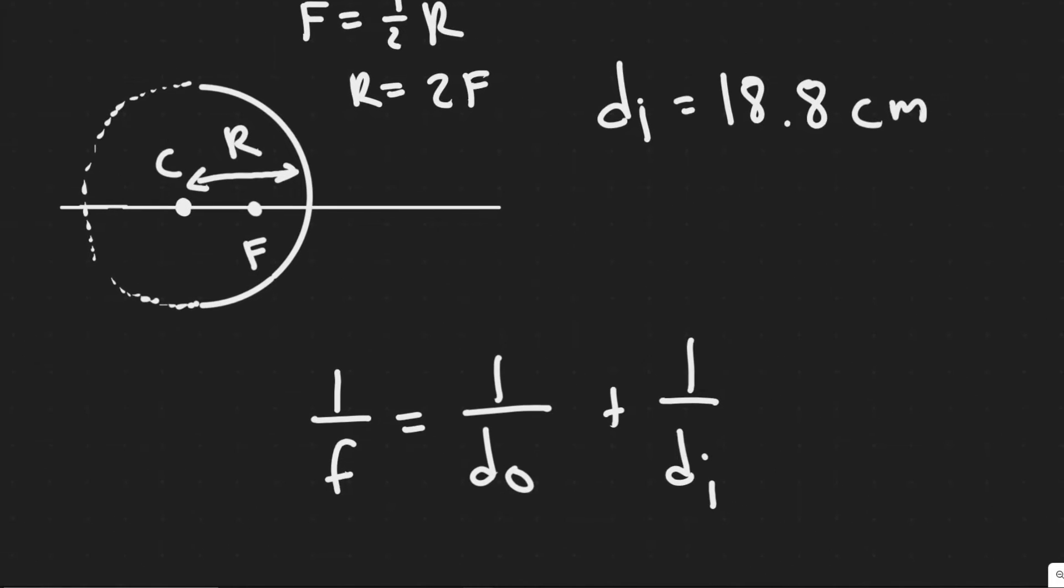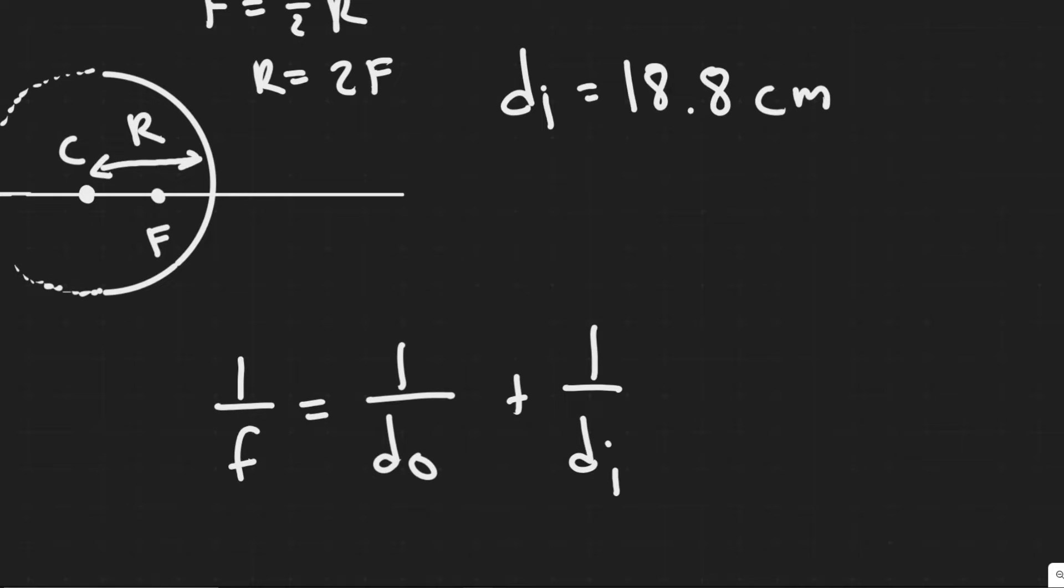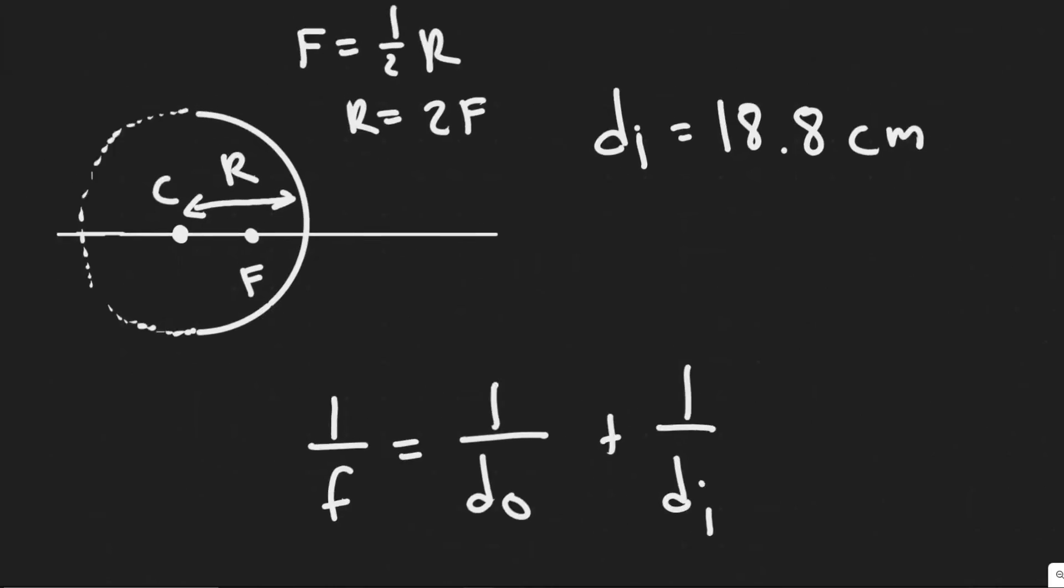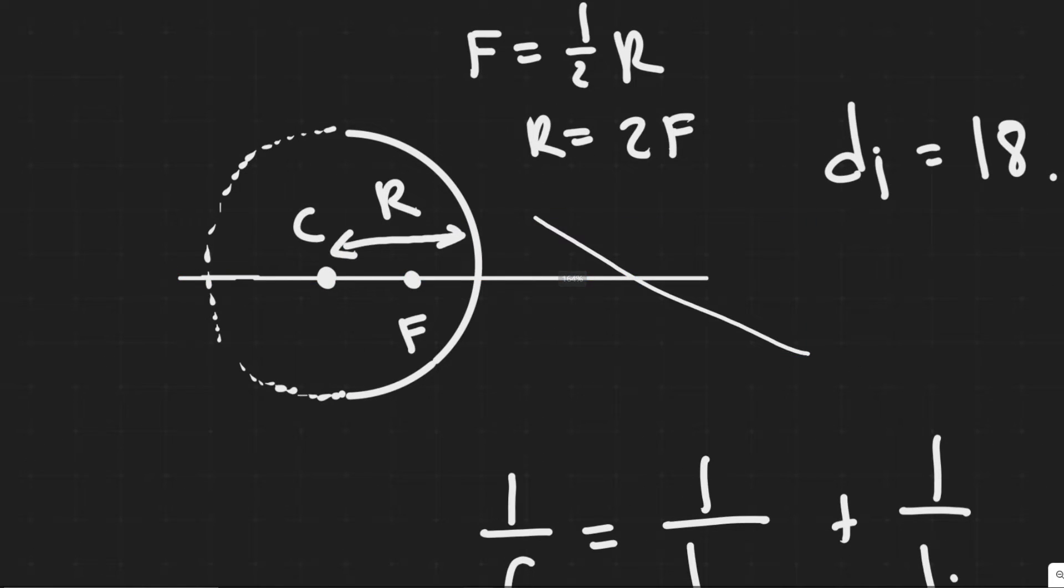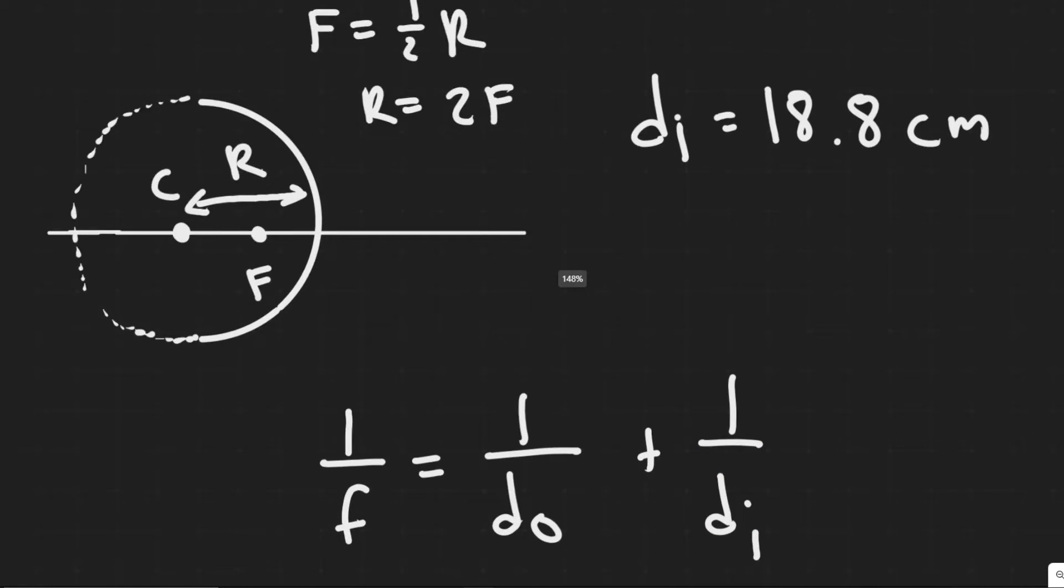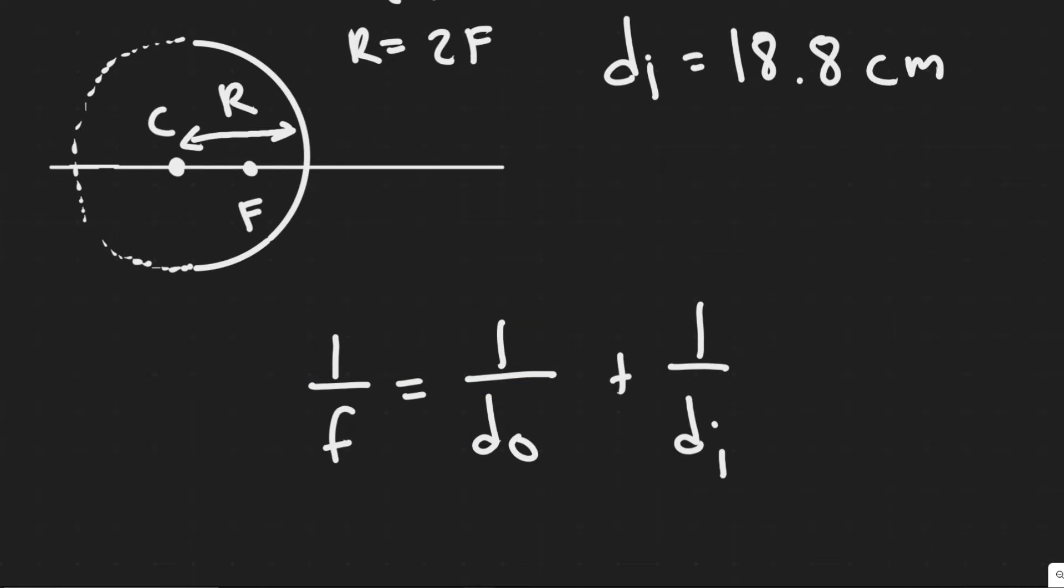D sub I is the distance between the image created and the mirror. So wherever the image is created to the mirror, that's going to go ahead and be your D I. So we need D sub 0 and D I.